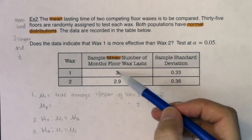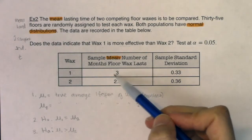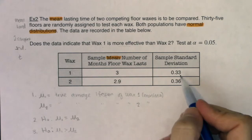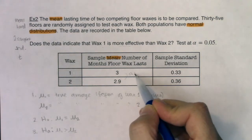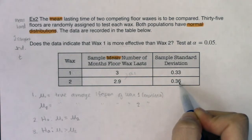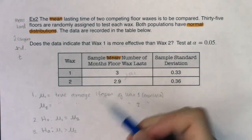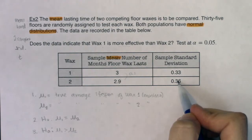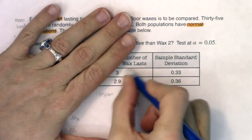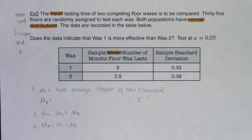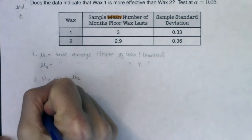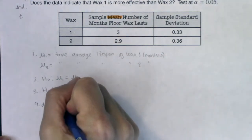Looking at the sample means — these are statistics from the two groups — wax one averaged 3 months and wax two averaged 2.9 months. They differ by only 0.1 months, which isn't much relative to the standard deviation, so I don't expect strong evidence that mu-one is greater than mu-two. Step four: alpha is 5%, which was given and is the default anyway.